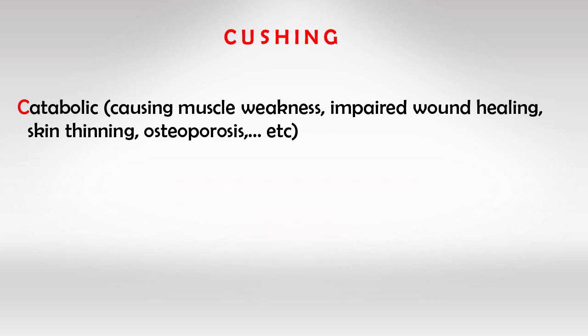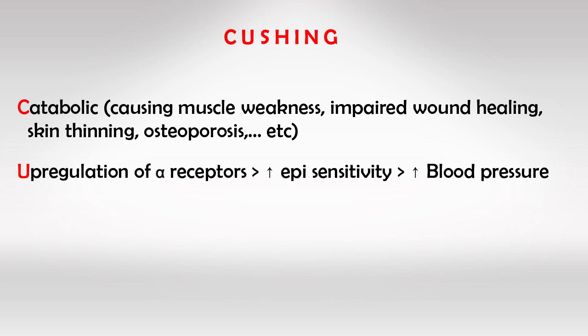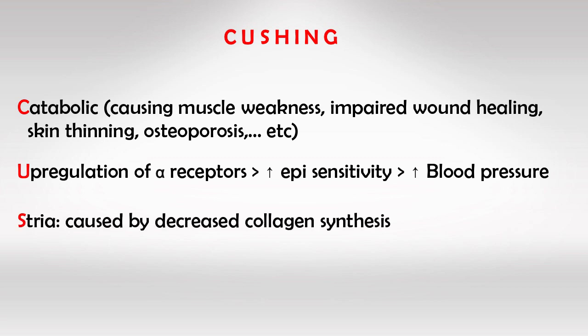So we will have osteoporosis, thin skin, and muscle weakness. Cortisol also up-regulates the alpha receptors in the blood vessels to cause increased blood pressure. In the skin, we can have striae due to decreased collagen synthesis.